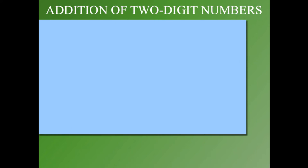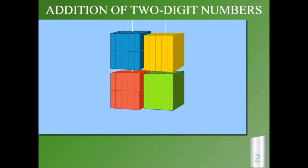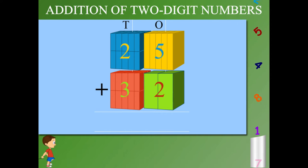Addition of 2-digit numbers. Here are 2 numbers: 25 and 32. 25 has 2 tens and 5 ones. 32 has 3 tens and 2 ones. Add the ones: 5 plus 2 is 7. Now add the tens: 2 plus 3